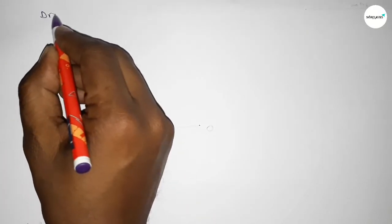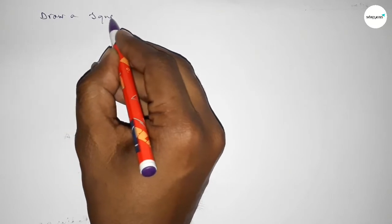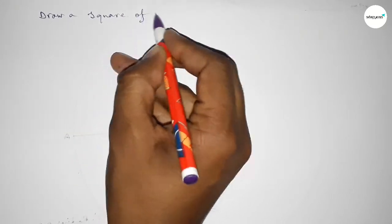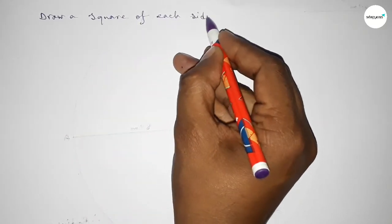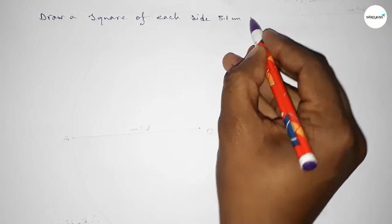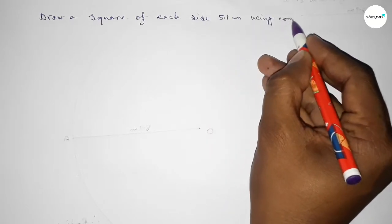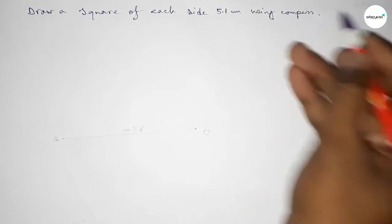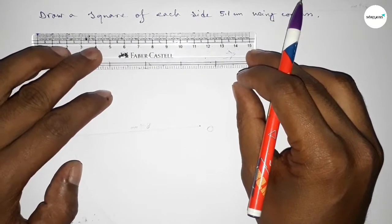Hi everyone, welcome to SI Share Classes. Today in this video we have to draw a square of each side 5.1 centimeters using a compass. So let's start the video.